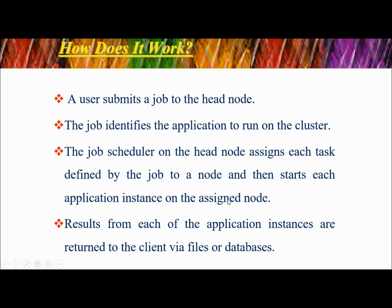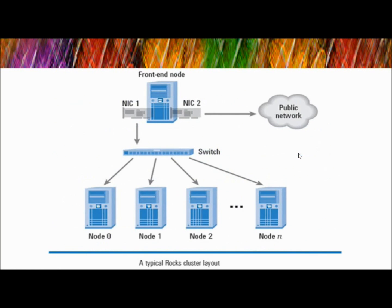Each application instance starts on a side node, and the results for each application instance are written to the client via files or databases. This is a typical ROCKs cluster layout. It has a front-end node, network interface cards, and a public network with a switch connecting the nodes.